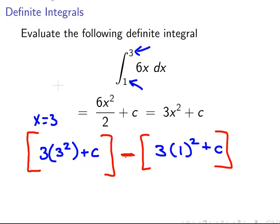So let's work both sides out. This works out 3 times 9. That works out to be 27. 27 plus c minus 3 times 1 squared. That is 3. And minus c because we have to minus times plus c. So it becomes a minus c.